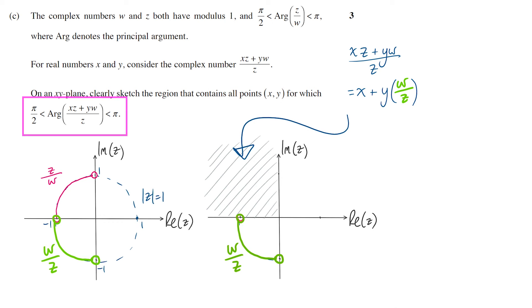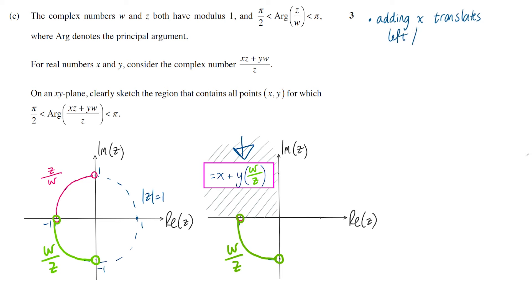Now X and Y here are real numbers, so we're taking our complex number W over Z. We're multiplying it by some real number Y and then we're adding some real number X. To understand the effect, it probably helps to start with the addition first. So by adding a real number, what would happen to a point on the complex plane? Well, it can only move to the left and right, because real numbers occur along the X axis. If we add a positive real number, we will translate to the right. If we add a negative real number, we will translate to the left.